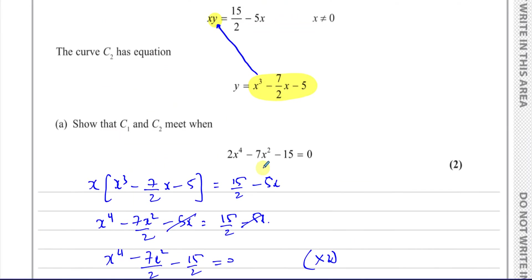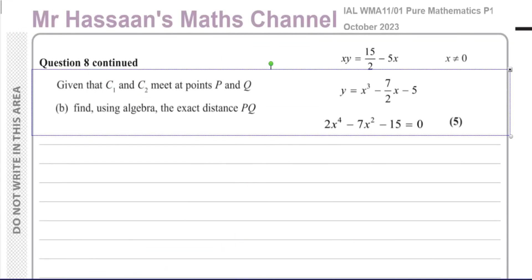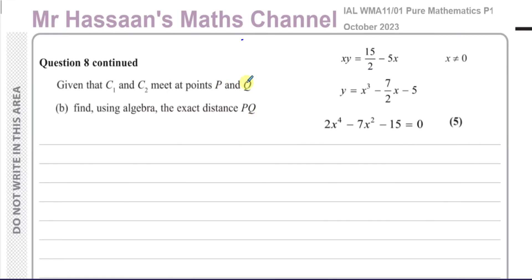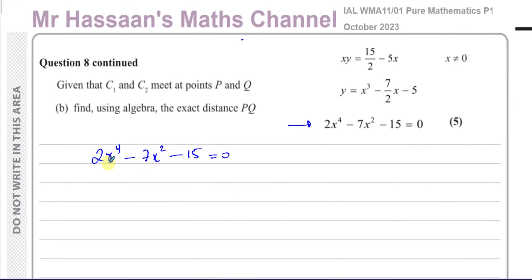So that's part A done. Moving on to part B — it says, given that C1 and C2 meet at points P and Q, find using algebra the exact distance PQ. The solutions to this equation give us the coordinates of the intersection points. The equation doesn't look like a direct quadratic, but it's a disguised quadratic because x to the power of 4 is the square of x squared.